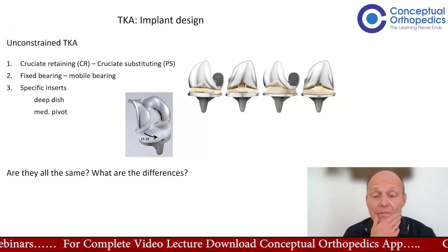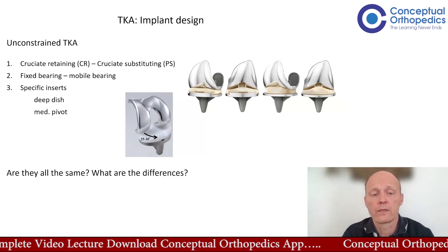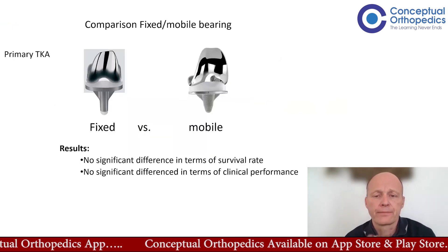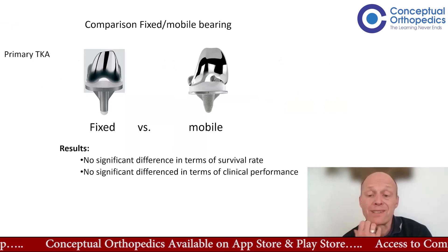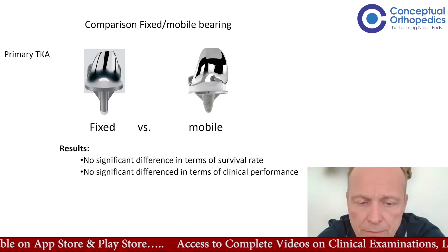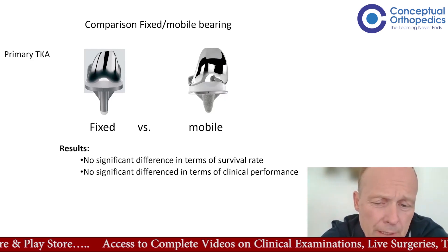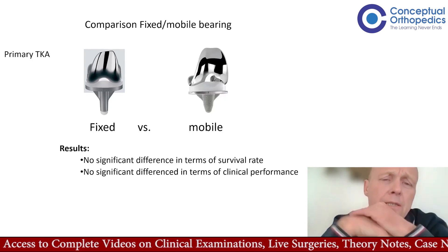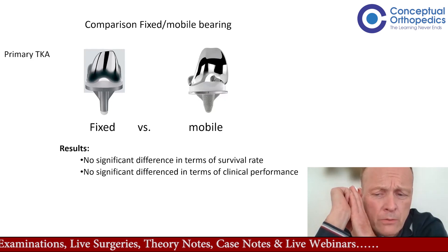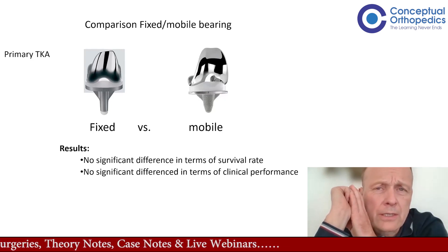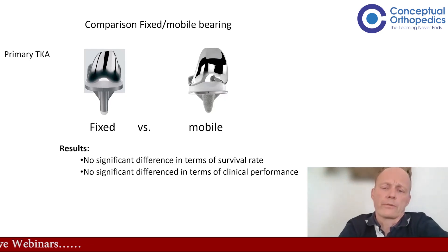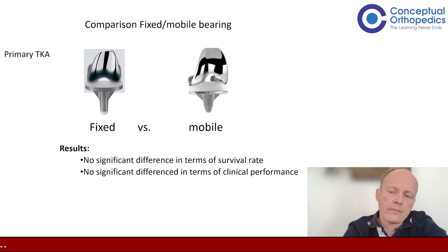So they are not all the same, and we have talked a bit about the differences. It is important to know the difference between a fixed and a mobile bearing, and of course between a CR and a PS. When it comes to comparison and we look at results, there is a lot of registry data from different parts of the world and many studies. In the end, I think we can summarize that there is no real difference between a fixed bearing and a mobile bearing knee when it comes to survival rate or clinical performance. So it is more the preference of the surgeon which implant they use in which patient.